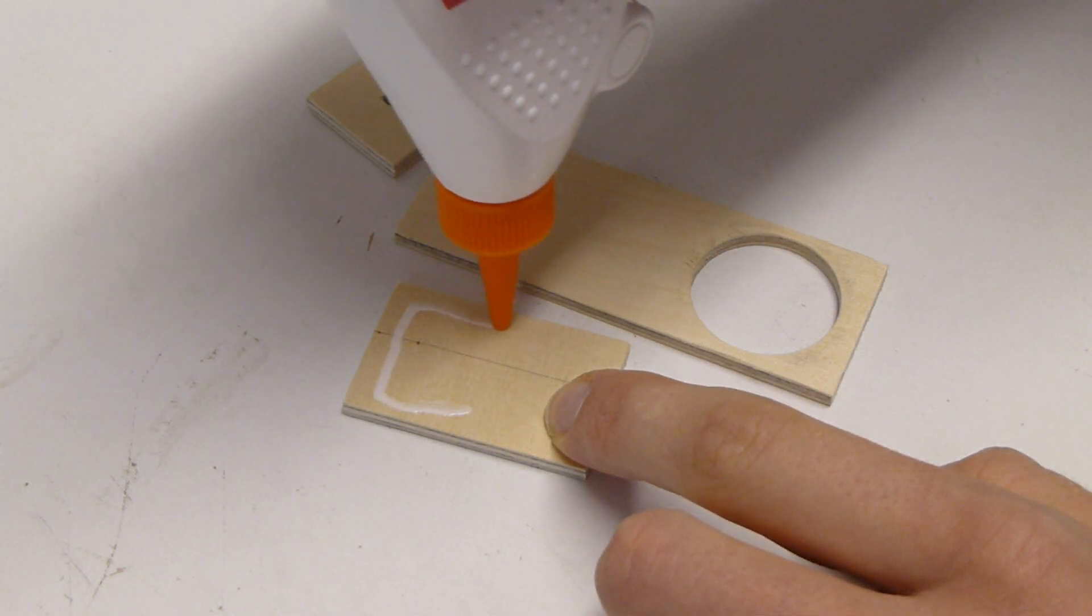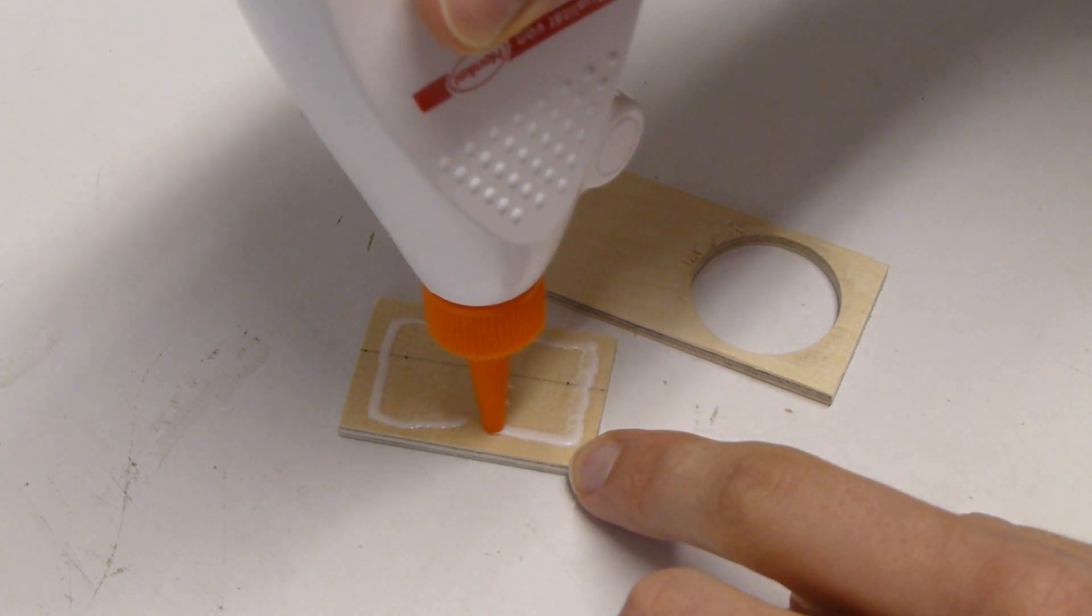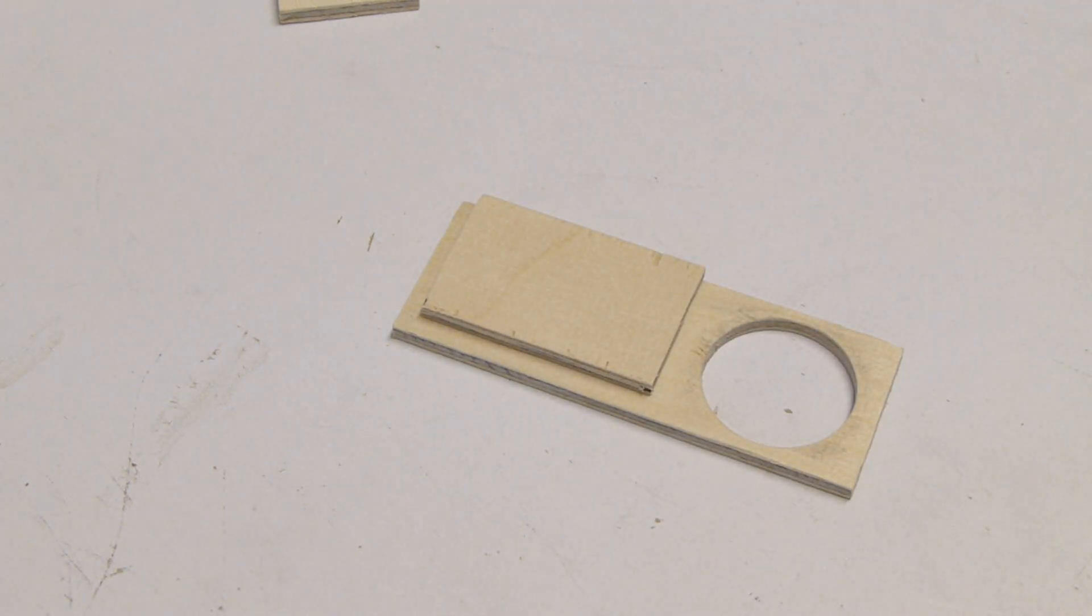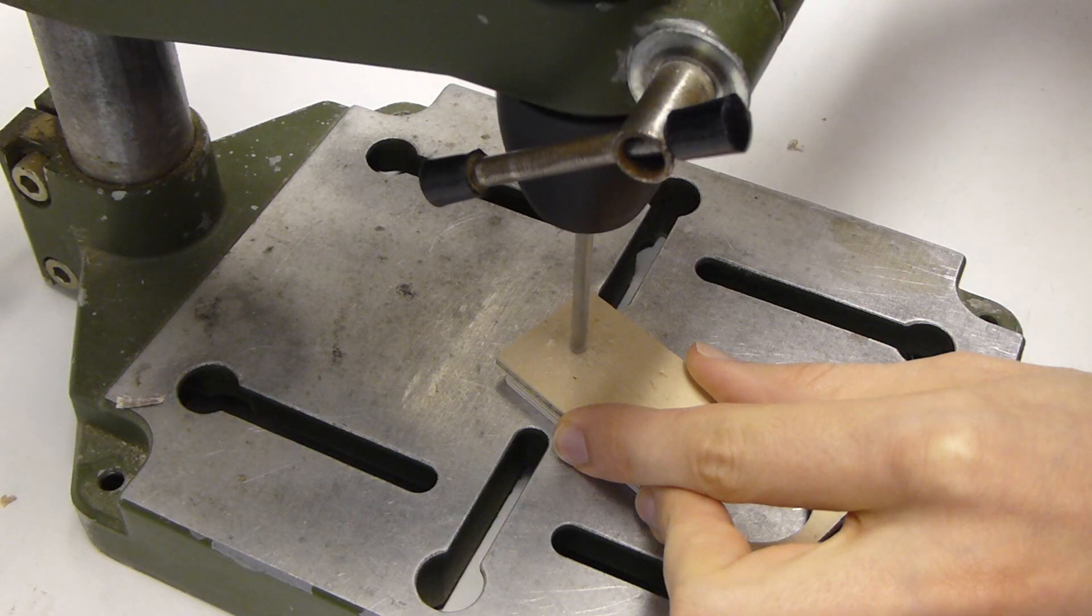Die beiden kleinen Löcher im Deckel erst bohren, wenn das Deckelunterteil an den Deckel geleimt wurde. So ist gewährleistet, dass die Löcher genau passen.